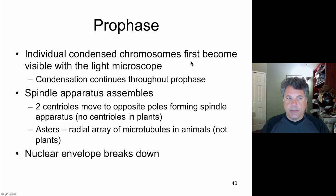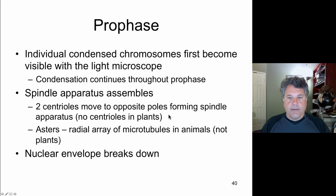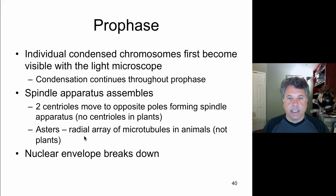In prophase, individual condensed chromosomes become visible with a light microscope. Condensation starts and continues throughout the entire phase. The spindle apparatus, organized by the centrioles as they complete migration to opposite poles, elaborates long microtubule cables. In animals there are several kinds: astral microtubules at the poles, polar microtubules extending from the centrioles toward and past the center of the cell, and kinetochore microtubules which attach to the kinetochores of chromosomes. The nuclear envelope also breaks down during prophase.